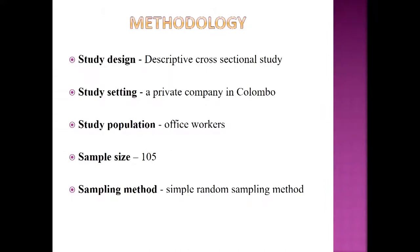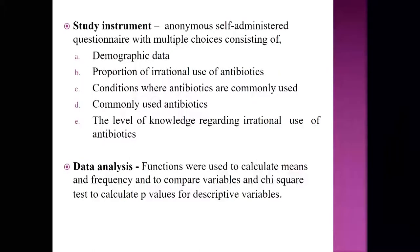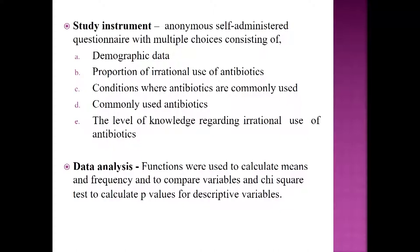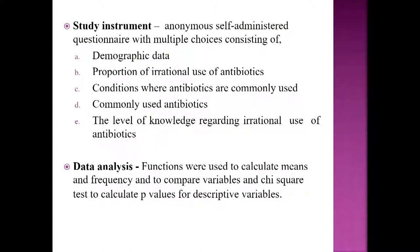This is a descriptive cross-sectional study which was conducted in a private company in Columbus. 105 office workers were selected using a simple random sampling method. Our study instrument was an anonymous self-administered questionnaire with multiple choices consisting of demographic data, to identify the proportion of irrational use of antibiotics, and conditions where antibiotics were commonly misused and the commonly misused antibiotics among those irrational users.